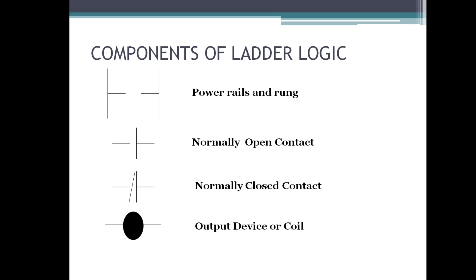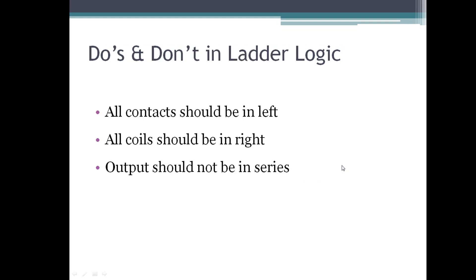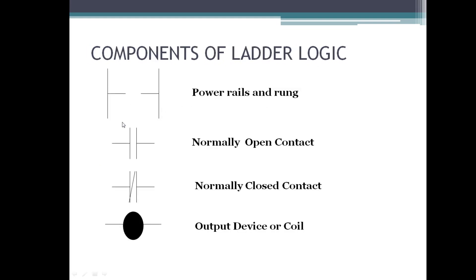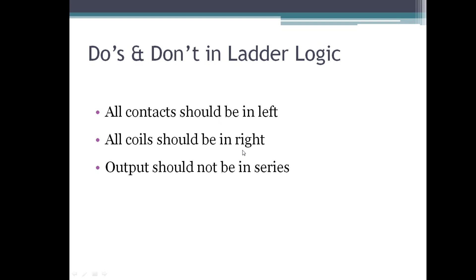Now let's look at the do's and don'ts in Ladder Logic. The two vertical lines are the left and right sides — all inputs should be connected to the left side only. The rung must end with a coil on the right side; ending with an input will cause an error. The coil should be on the right side, and the output should not be placed in series — each rung should have only one output. Remaining do's and don'ts will be explained in the software.